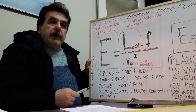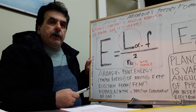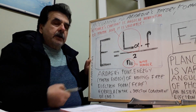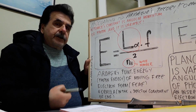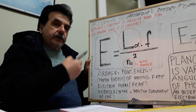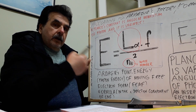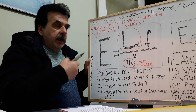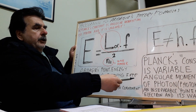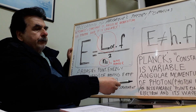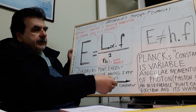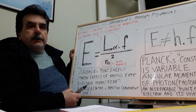This variability depends on the electron motion form's motion — its velocity — depending on its source velocity, motion direction, and orientation. Planck's constant is the variable angular momentum of the photon. The photon is an inseparable point on the electron and its waves.